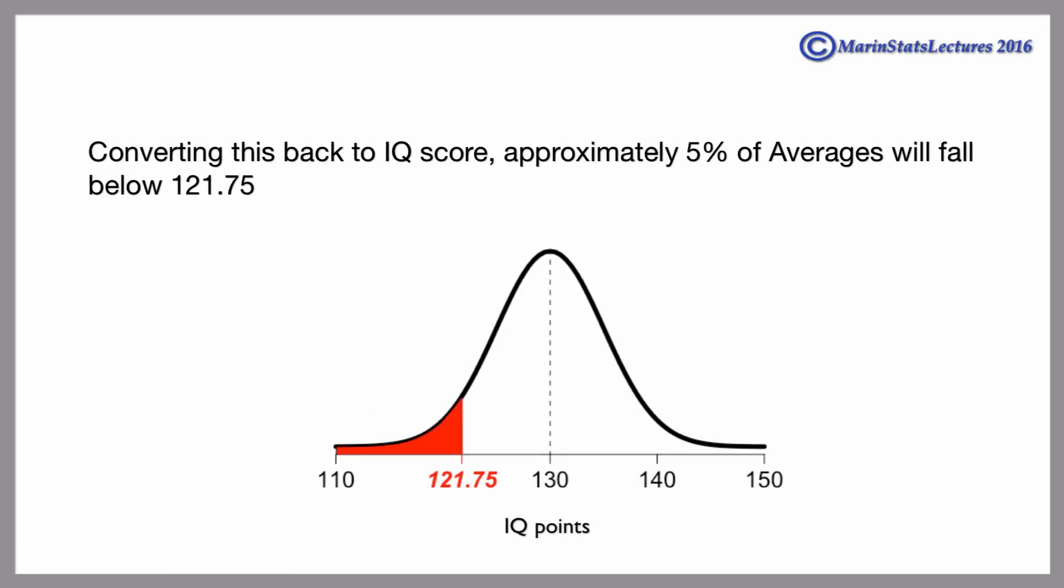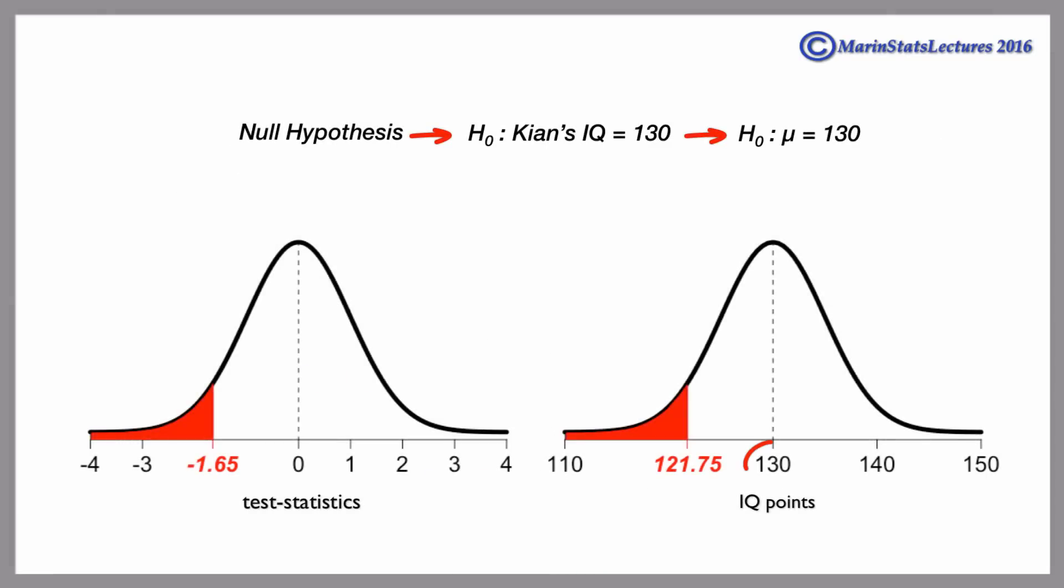Converting this back to IQ score, approximately 5% of averages will fall below 121.75. In other words, if his IQ really is 130, approximately 5% of the time we'd end up with an average IQ score of 121.75 or less by chance, or a test statistic of negative 1.65 or less by chance.